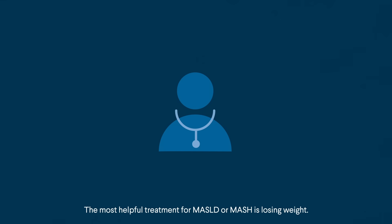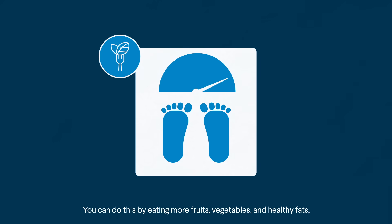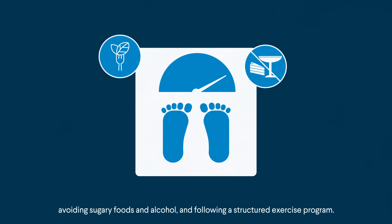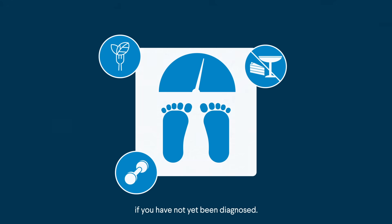The most helpful treatment for MASLD or MASH is losing weight. You can do this by eating more fruits, vegetables, and healthy fats, avoiding sugary foods and alcohol, and following a structured exercise program. These same lifestyle choices can help prevent MASLD and MASH if you have not yet been diagnosed.